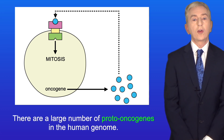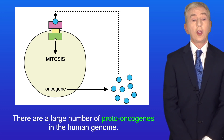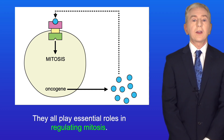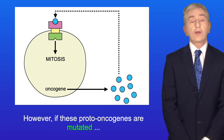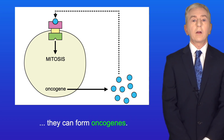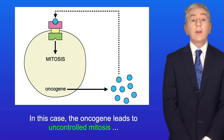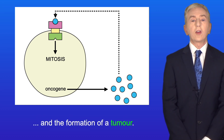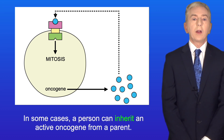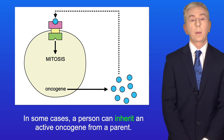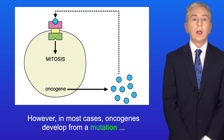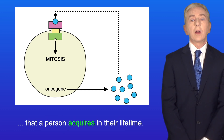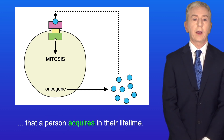There are a large number of proto-oncogenes in the human genome, and they all play essential roles in regulating mitosis. However, if these proto-oncogenes are mutated they can form oncogenes, leading to uncontrolled mitosis and the formation of a tumour. In some cases a person can inherit an active oncogene from a parent, but in most cases oncogenes develop from a mutation that a person acquires in their lifetime.